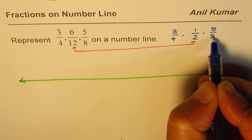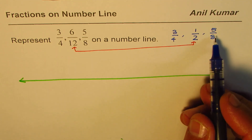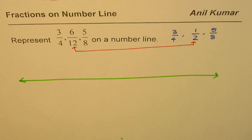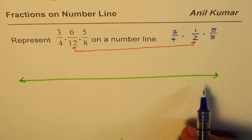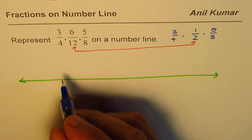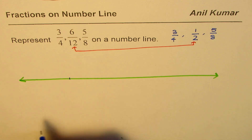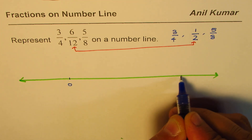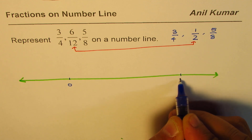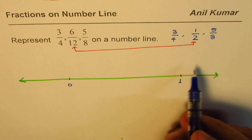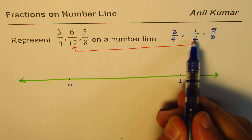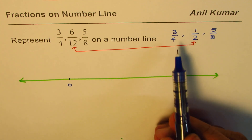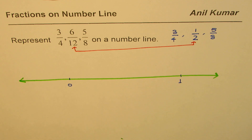Think of it like this: 5 out of 8 is like 4 plus 1, so slightly more than half. We'll explore that more while plotting on the number line. Let's say this is 0 and this is 1. All three fractions we are talking about are between 0 and 1 — that is one thing we know.